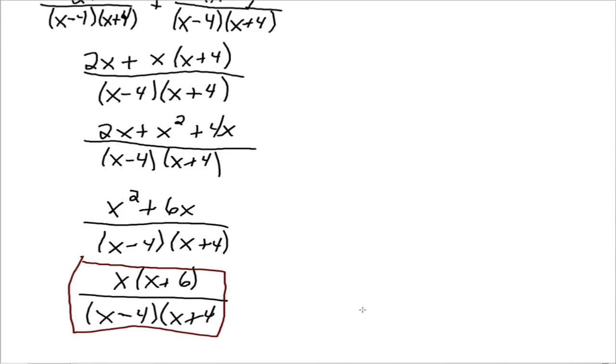Alright, I'm starting to get the hang of it. Alright, let's do one more. Alright, x squared plus, excuse me, x over x squared plus 11x plus 30 minus 5 over x squared plus 9x plus 20. So let's factor these denominators.